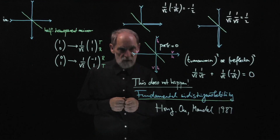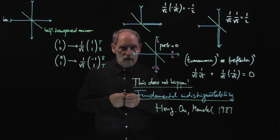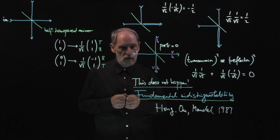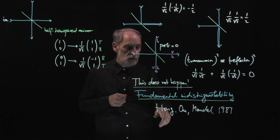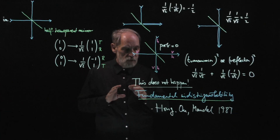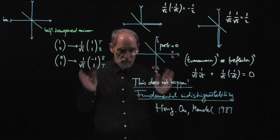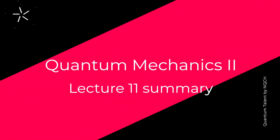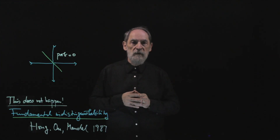This lack of distinguishability is not a lack in our skills — it is not something that a future generation of physicists will overcome. Experiments like those by Hong, Ou, and Mandel confirm that the indistinguishability of photons and other quantum entities is fundamental. In summary, the fundamental indistinguishability of identical particles such as photons has important consequences, one of which is the Hong–Ou–Mandel effect.